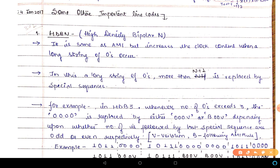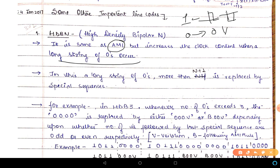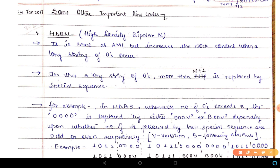We will now see another important type of line code: HDB3, which stands for High Density Bipolar 3. There are certain disadvantages of AMI line code — whenever a long string of zeros occurs, clock extraction is difficult. In AMI, one is represented as a pulse (alternating positive or negative) and zero is represented by zero volts. So whenever a long string of zeros comes, there are no transitions in the transmitted sequence, which is why clock extraction is difficult.